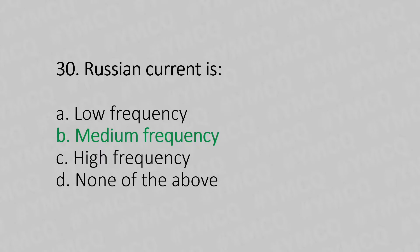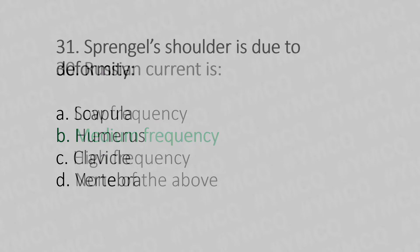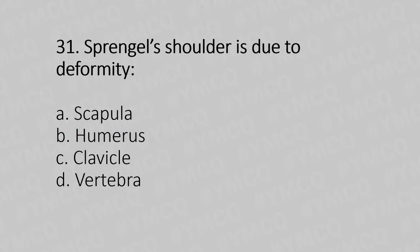Question 31: Sprengel's shoulder is due to the deformity of — Option A: scapula. Option B: humerus. Option C: clavicle. Option D: vertebra. The answer is Option A: scapula.